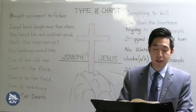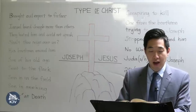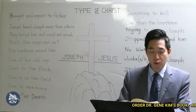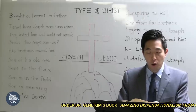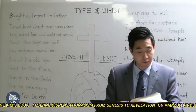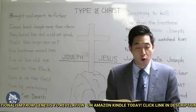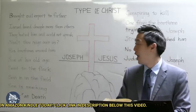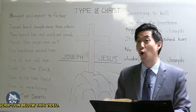Micah 5:2: 'But thou, Bethlehem Ephrata, thou be little among the thousands of Judah. Yet out of these shall he come forth unto me that is to be ruler in Israel, whose going forth have been from of old, from everlasting.' God's age is from of old. Notice: Joseph is the son of his old age; Jesus Christ is the Son, and the verse mentions from of old.